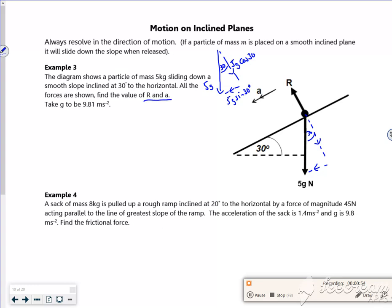Now I want to find out R and a. It tells me it's smooth as well, so there's no friction. So if I look perpendicular, if I do F equals ma perpendicular, then I've got to look at the forces going that way minus the forces going that way, which is equal to zero because it's an equilibrium.